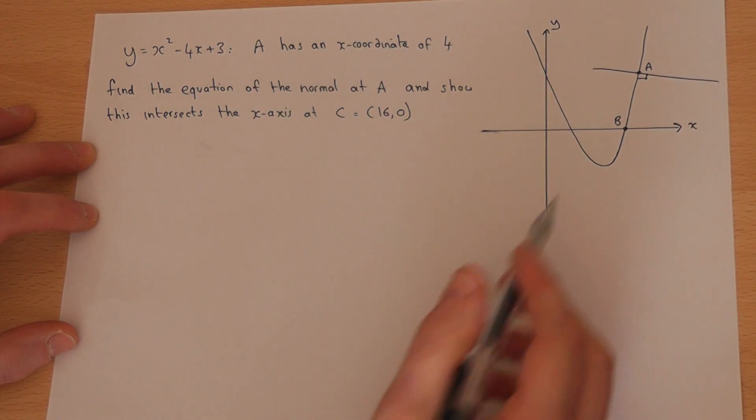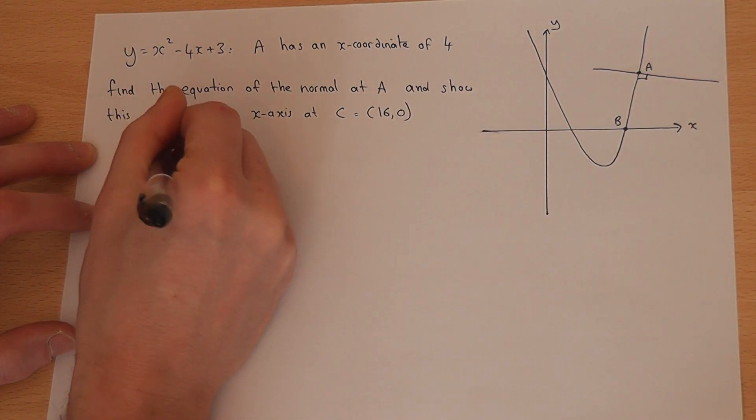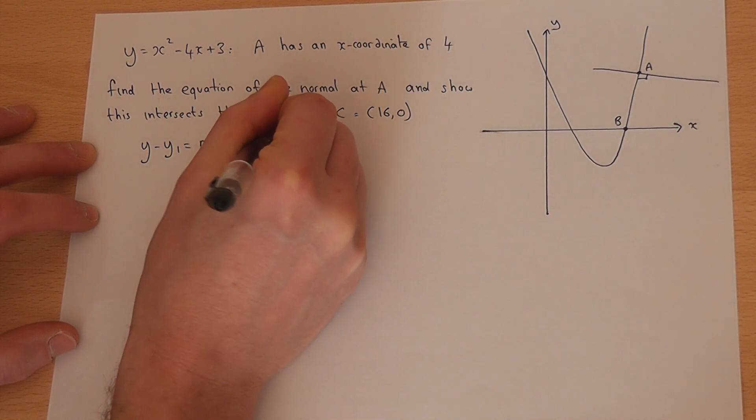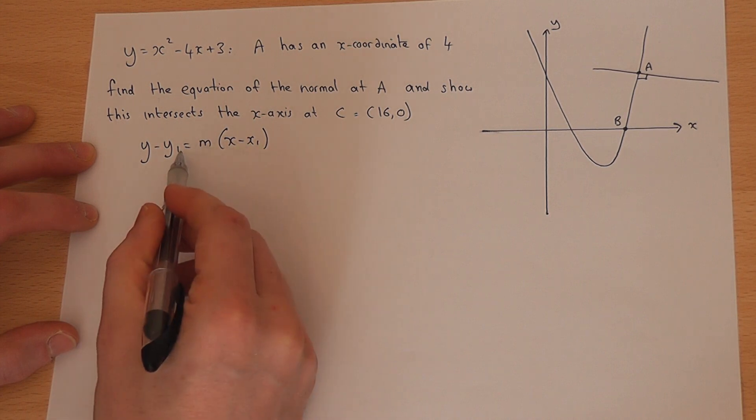To find the equation of this line, we resort to the general equation of a line, and we must find a coordinate on that line and also the gradient of that line.